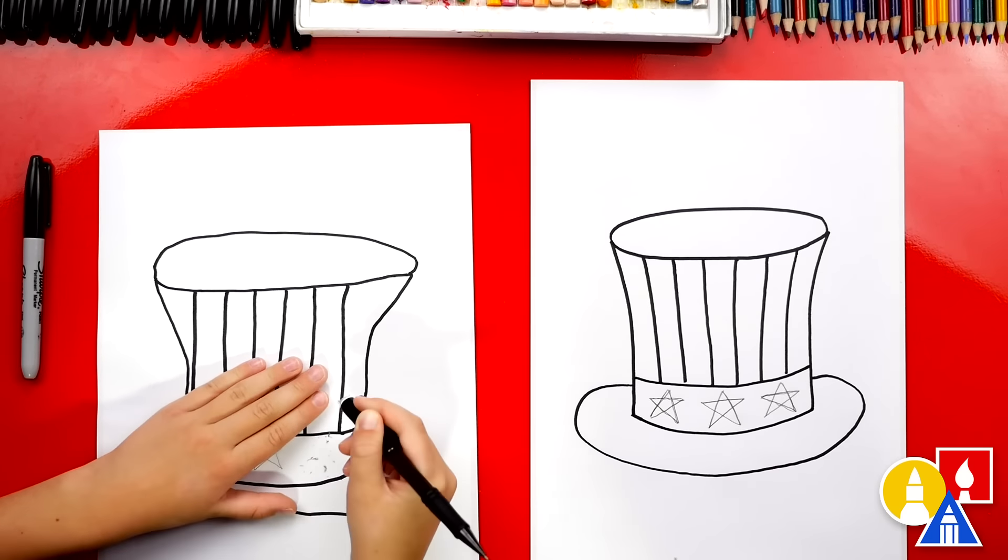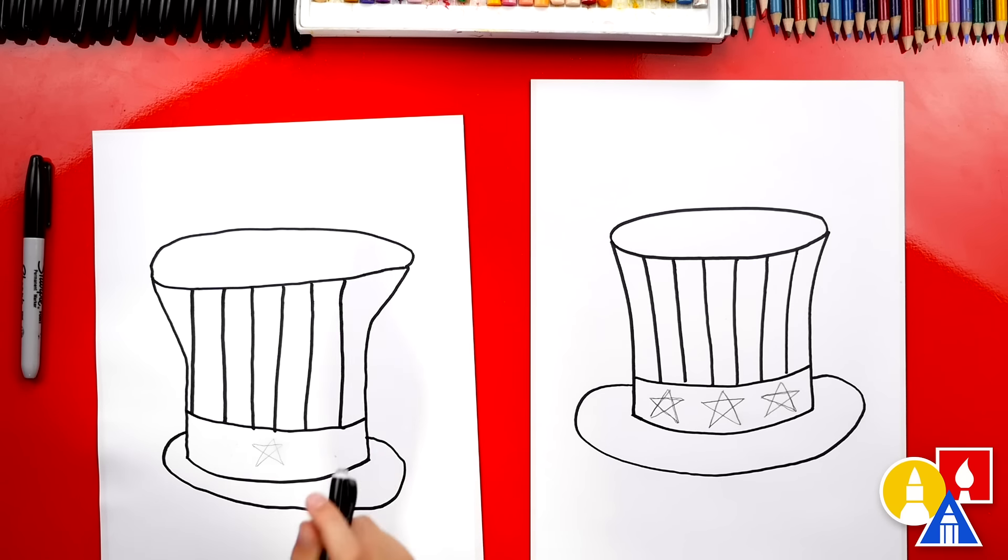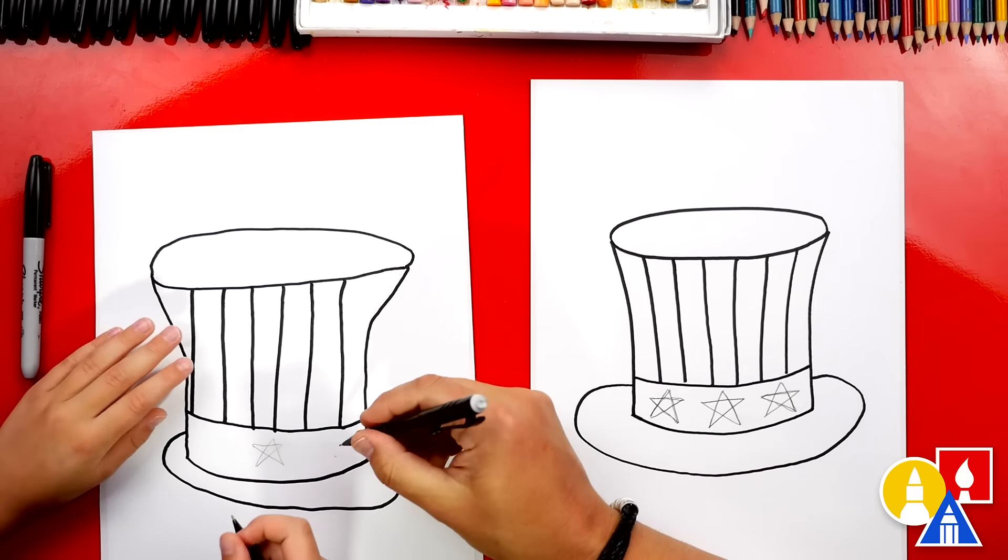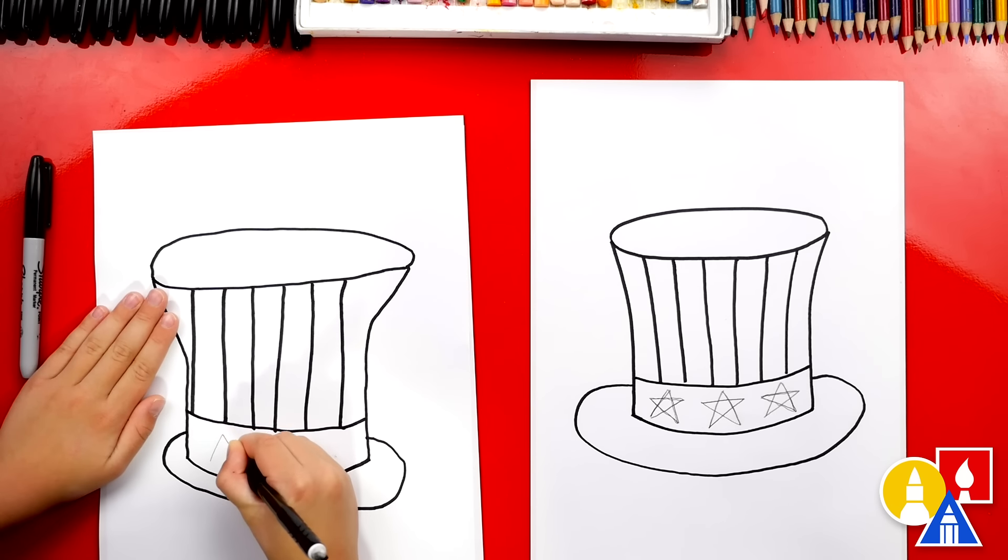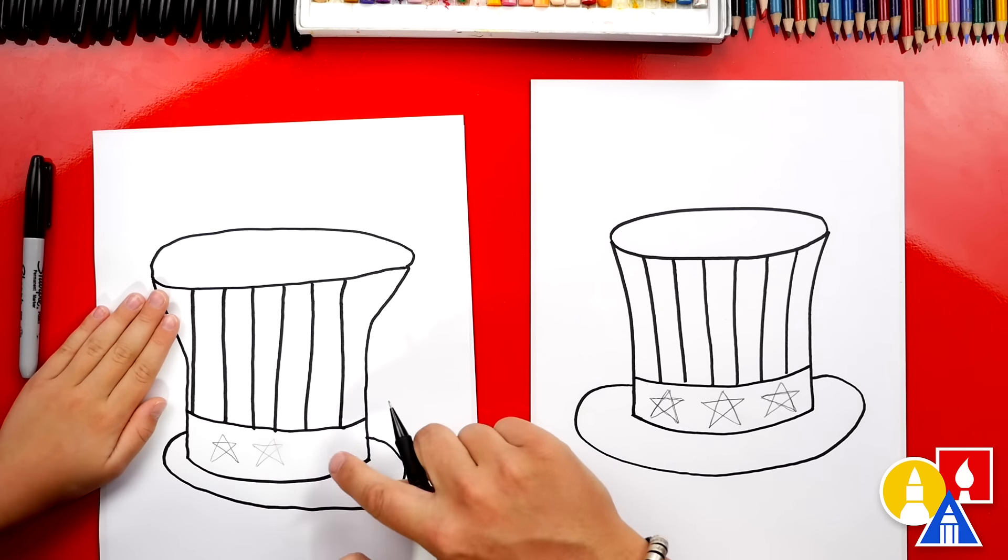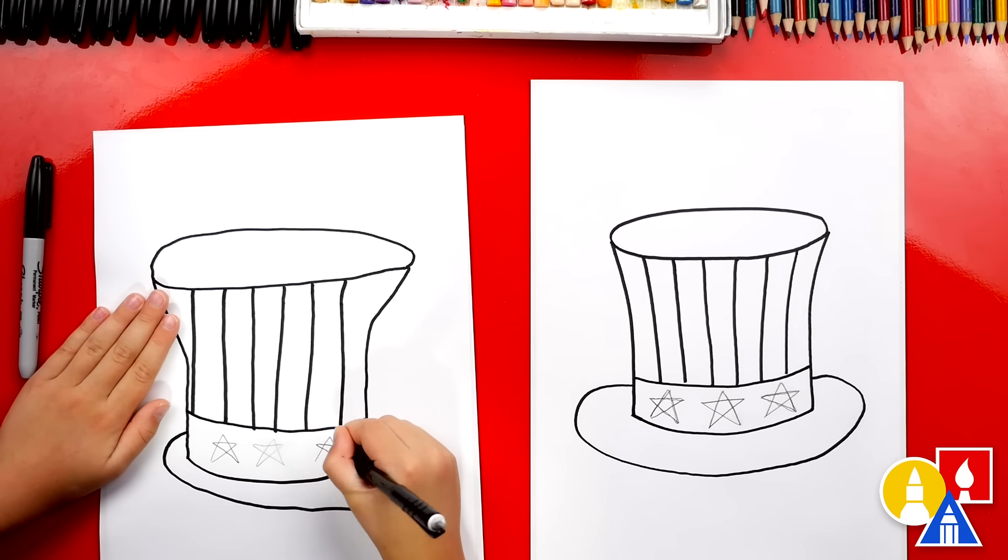So you're erasing your stars because you drew them a little small. Yeah. That's what's nice about using a pencil. So now you can draw the star again, but draw bigger. Good job. That's way bigger. I like it. Okay, do one more over here.